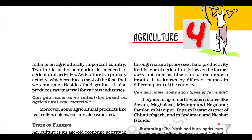Pulses. India is the largest producer as well as the consumer of pulses in the world. These are a major source of protein in a vegetarian diet. Major pulses grown in India are Toor, Urad, Moong, Masoor, Peas, and Gram. Pulses need less moisture and survive even in dry conditions. Being leguminous crops, all these crops except Arhar help in restoring soil fertility by fixing nitrogen from the air. Therefore, these are mostly grown in rotation with other crops. Major pulse-producing states in India are Madhya Pradesh, Uttar Pradesh, Rajasthan, Maharashtra, and Karnataka.